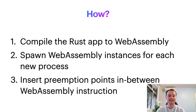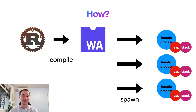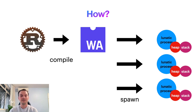We also analyze the WebAssembly instructions and insert preemption points. We have a reduction counter, and once a certain number of instructions is executed, we yield back to the scheduler — this assures responsiveness. To visualize this process: we go from Rust code to a WebAssembly module, and from that WebAssembly module we spawn many Lunatic processes. Those are basically WebAssembly instances where each instance gets their own heap and stack. From a runtime perspective, WebAssembly instances are wrapped into async futures that are scheduled on top of an async scheduler.